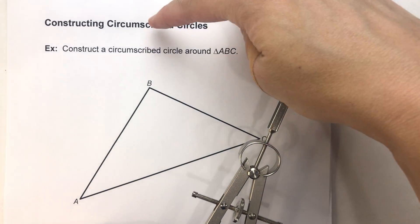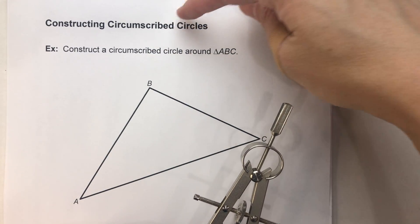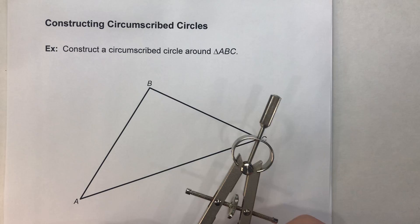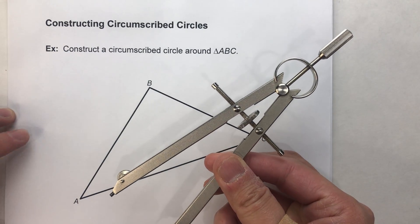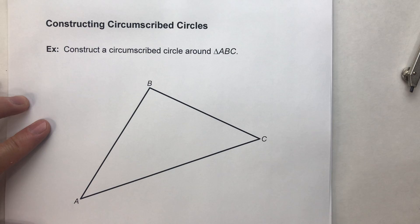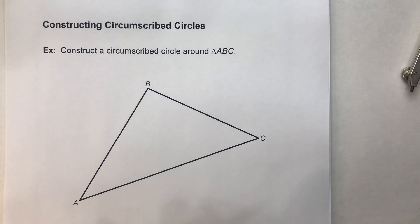So today, we are constructing a circumscribed circle about a triangle using a compass. Now before we do the construction, let's do a little sketch so we know exactly what we're doing here.